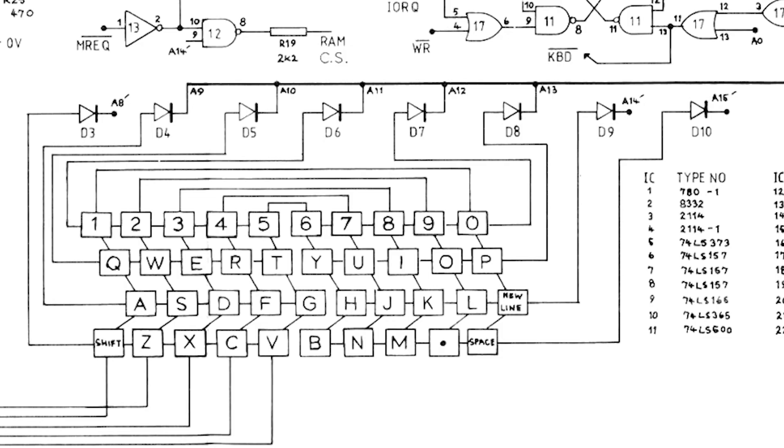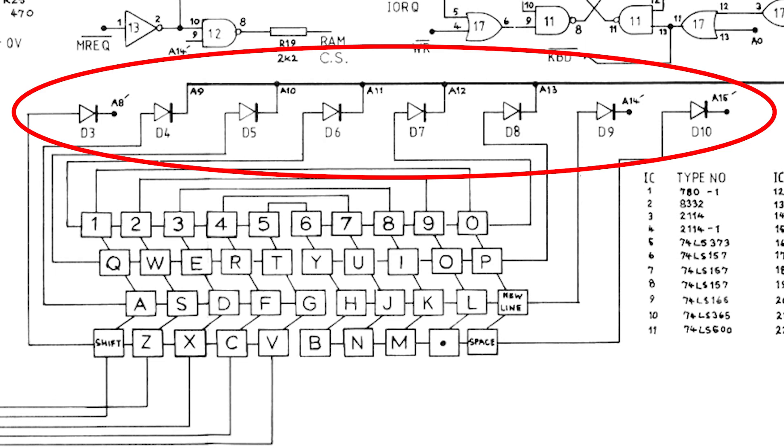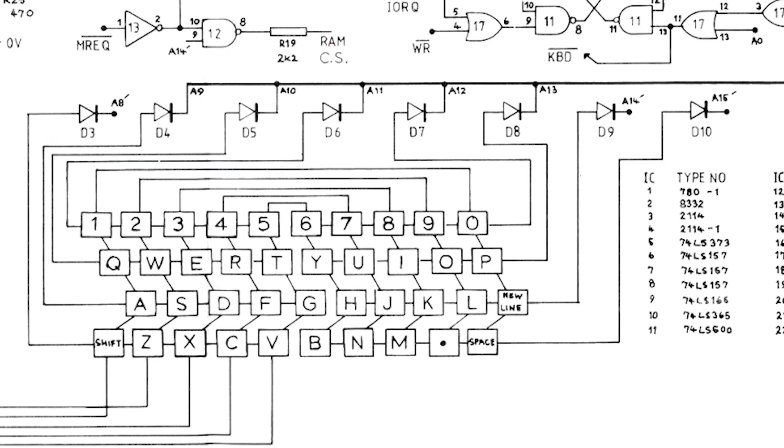So Sir Clive and his team used these upper 8 bits to select the row of the keyboard. Now he used a set of diodes here, but they are not actually necessary for only one key being pressed. So why have them?